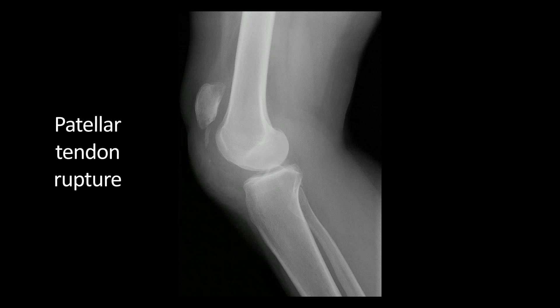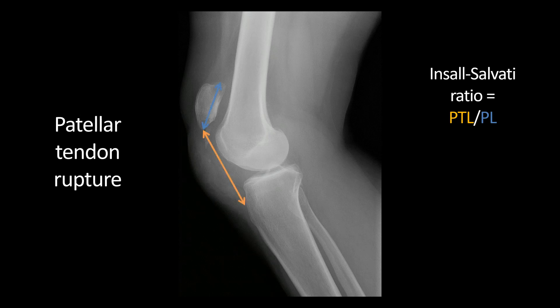Rupture of the patellar tendon usually occurs at the patellar or tibial attachment in the setting of trauma. But if it's due to a systemic illness, it's more common to tear in the mid-substance of the tendon. Now, patellar tendon rupture is actually less common than quadriceps tendon rupture. To make this diagnosis, the Insall-Salvati ratio is very helpful to evaluate for abnormal patellar position. You measure the patellar tendon length and then also the patellar length, which is the greatest pole-to-pole length — it's slightly oblique.